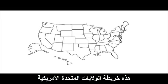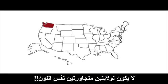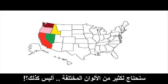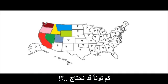Here's a map of the United States. To color in this map so that no state shares the color of an adjacent state, we'd need a lot of different colors, right? Well, how many colors would we need?